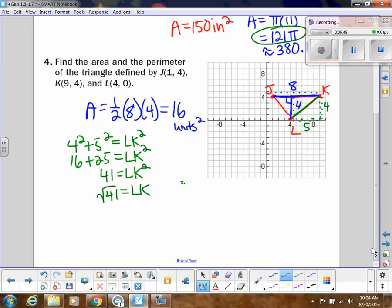And then for JL, let's see. This is 1, 2, 3, 4. And then this one is 1, 2, 3, 4, right? 1, 2, 3, yep. So now that's a 3, 4, 5 triangle. So I know that JL is 5.